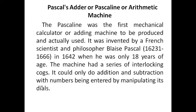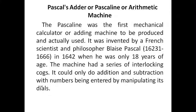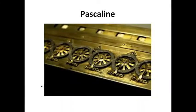The Pascaline had wheels representing ones, tens, hundreds, thousands, and so on. It was a mechanical calculator. Blaise Pascal was a French scholar who developed this calculator. He developed this device at the age of 18, and it could perform addition and subtraction. The machines were operated by turning the dials, but the speed was limited.